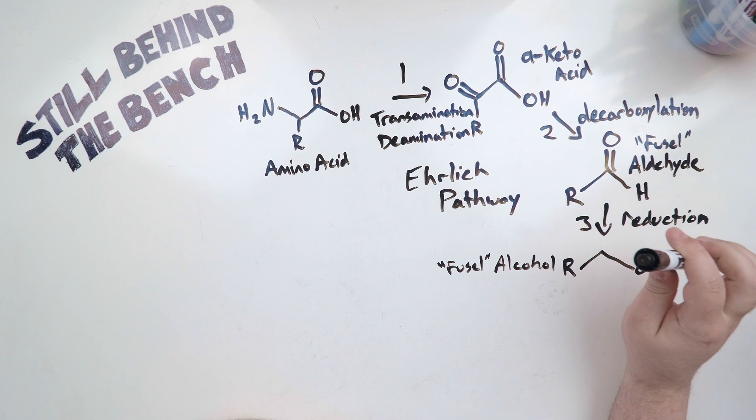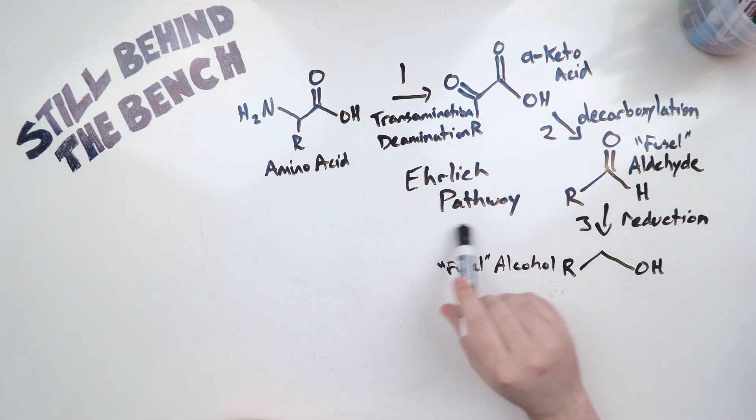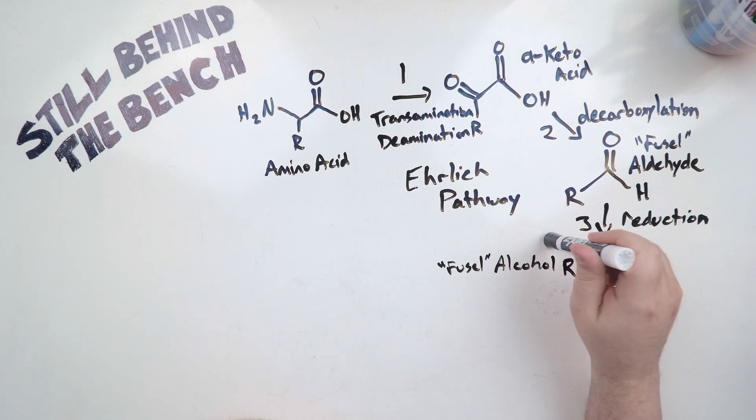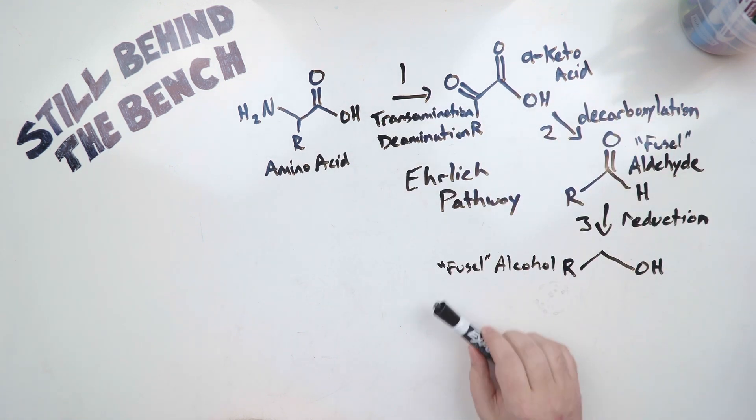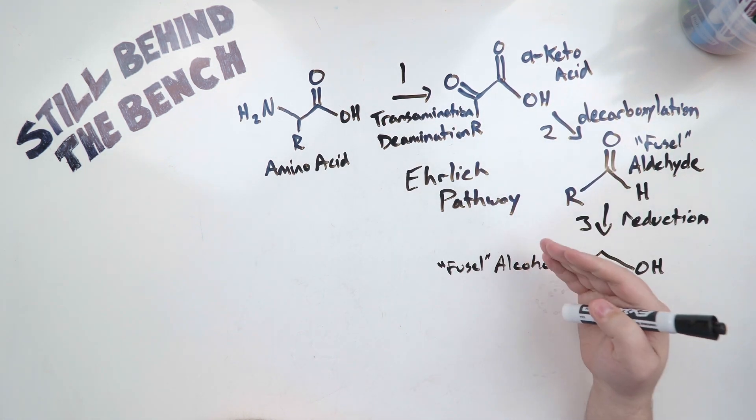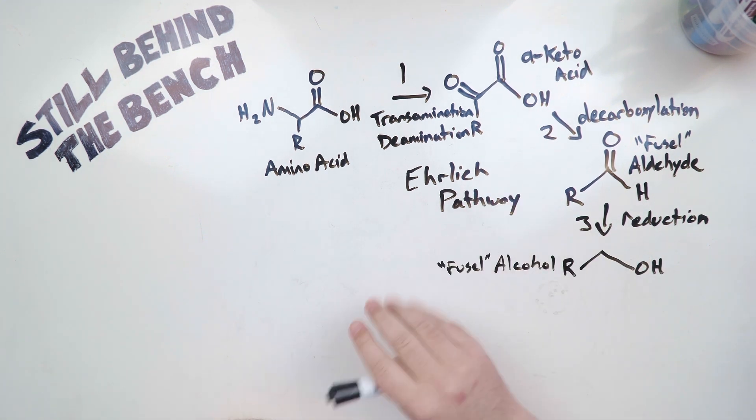Now there are about nine amino acids which can follow the Ehrlich pathway. I'm only going to be talking about seven of them in this video. I'm going to talk about the other two in their own video. Yeah, there's seven of them that become transformed into a fusel alcohol. I'm going to show the list on the screen as a graphic.